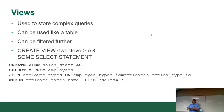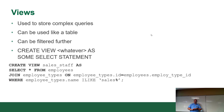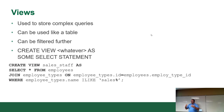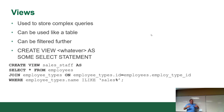Views are used to store complex queries. Think of views like bookmarks — you've got a long URL, you add a bookmark, and next time you just click it. Views do the same thing: you take a complex query, give it a name, store it in the database, and it remembers the query for you. It behaves just like a table — you can use it in joins, WHERE clauses, aggregates, everything you normally do.